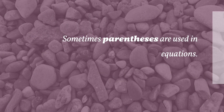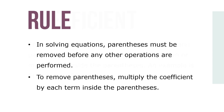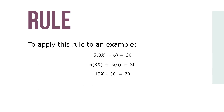Some parentheses are used in equations. They contain a number just outside the left-hand parentheses known as the coefficient, and two or more terms inside the parentheses. As an example, 5(3x + 6) = 20. In solving equations, parentheses must be removed before any other operations are performed. To remove parentheses, multiply the coefficient by each term inside the parentheses. So 5(3x + 6) = 20 is actually 15x plus 30 equals 20.